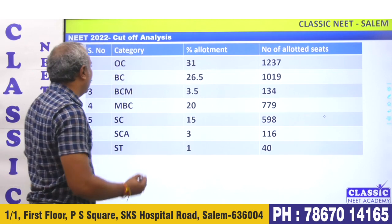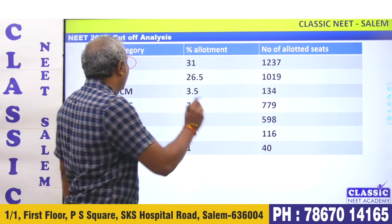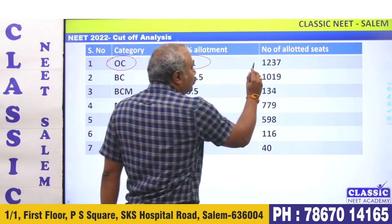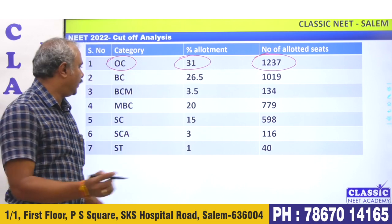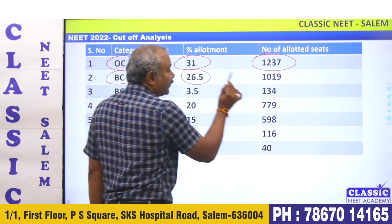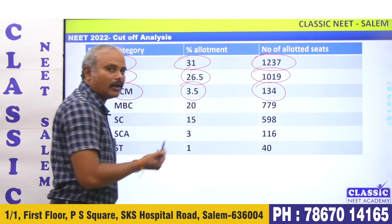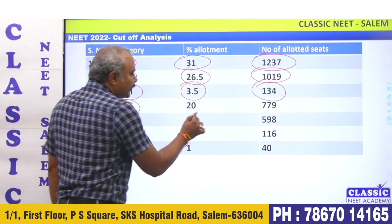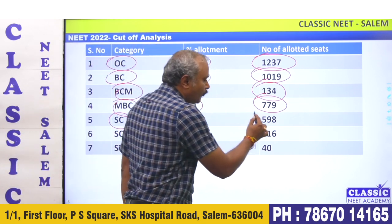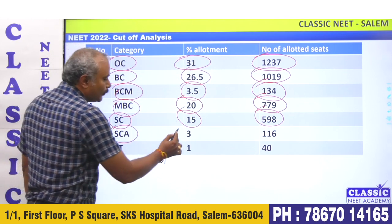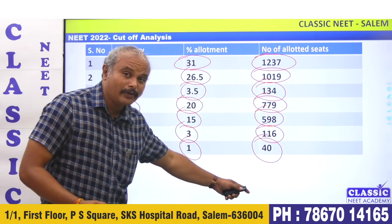OC is 7.5%, 15% All India Quota, 31% allotment — 1,237 seats open category for forward customers. BC is 26.5%, 1,019 seats allotment. BCM 3.5%, 134 seats allotment. MBC 20% reservation, 779 seats allotment. SC 15%, 598 seats allotment. SEA 3%, 116 seats allotment. ST 1%, 40 seats allotment.